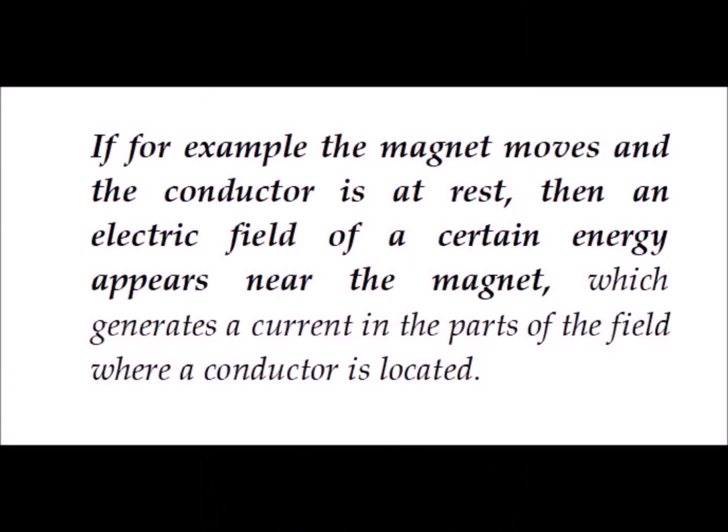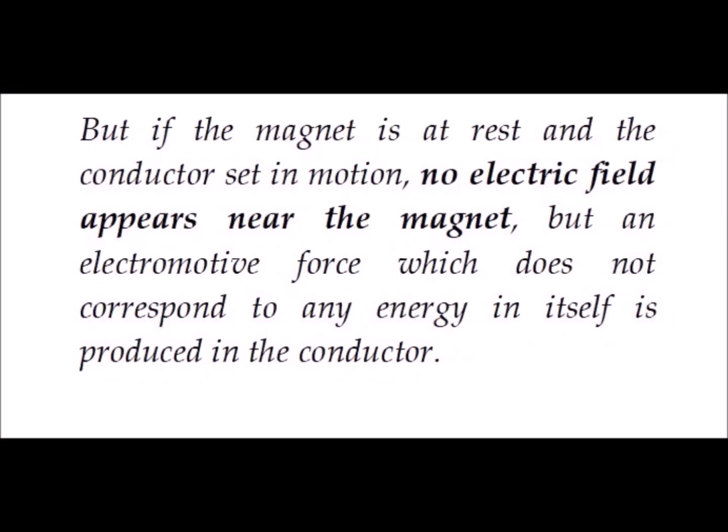But this same treaty of 1905 is based on an error. Here is the translation of a part of the introduction of the 1905 paper: if the magnet moves and the conductor is at rest, then an electric field of a certain energy appears near the magnet, which generates a current in the parts of the field where a conductor is located. But if the magnet is at rest and the conductor set in motion, no electric field appears near the magnet, but an electromotive force which does not correspond to any energy in itself is produced in the conductor.